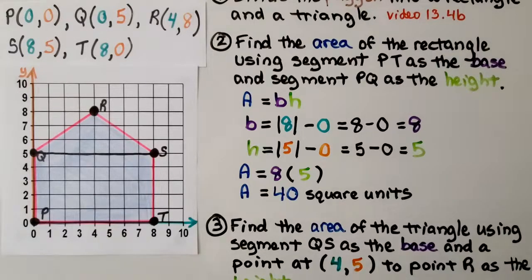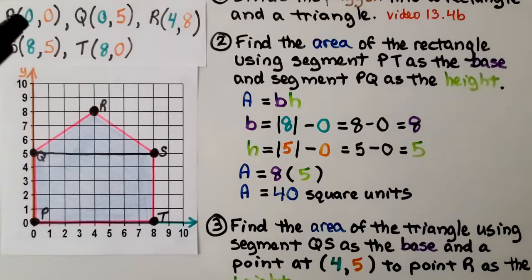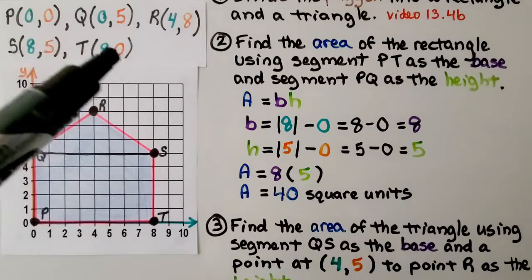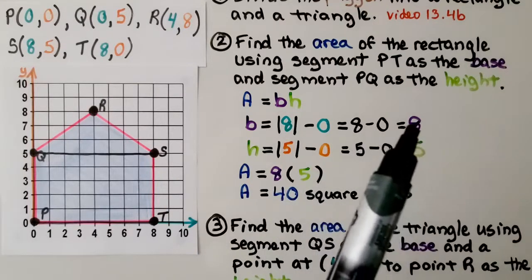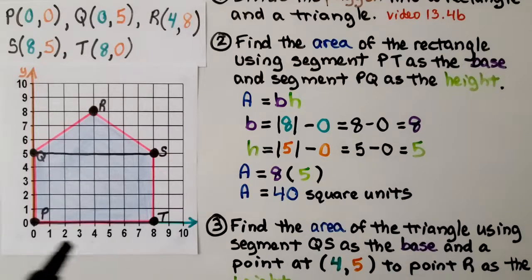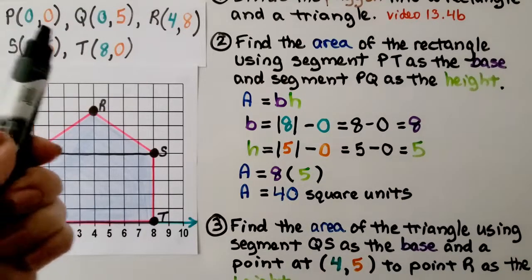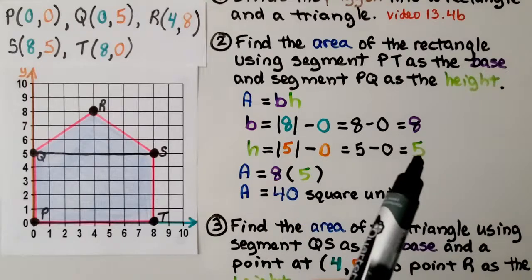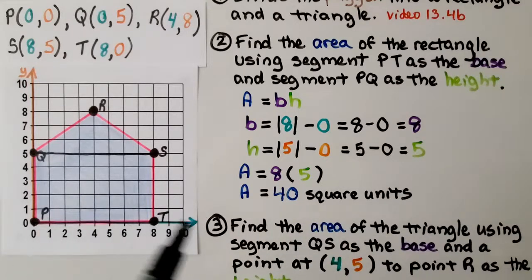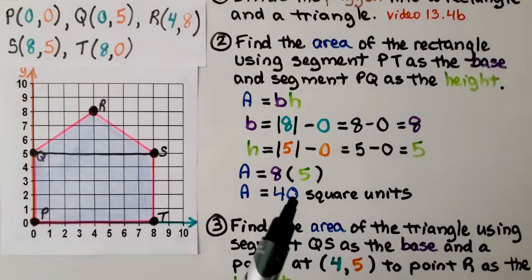Step two: find the area of the rectangle using segment P, T as the base and P, Q as the height. P is at the origin (0, 0) and T is at (8, 0). The Y values are the same, so we use the X values: the absolute value of 8 minus 0 is 8, so our base is 8. P is (0, 0) and Q is (0, 5); the X values are the same, so we use the Y values: the absolute value of 5 minus 0 is 5. Area equals 8 times 5, that's 40 square units.